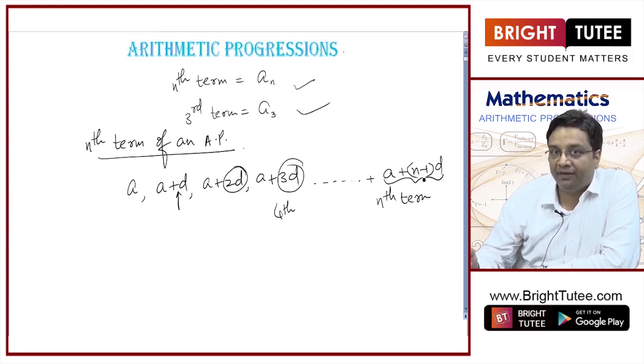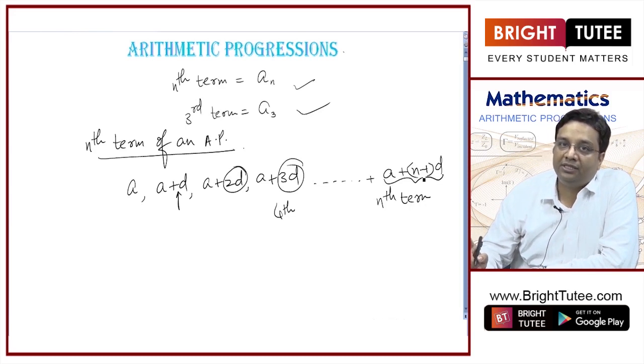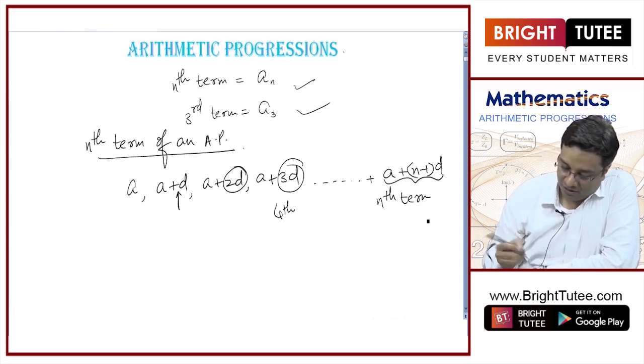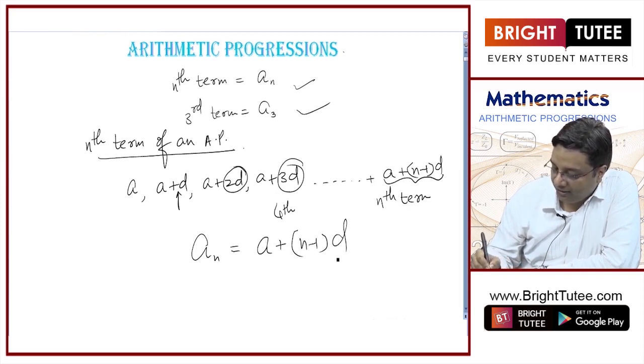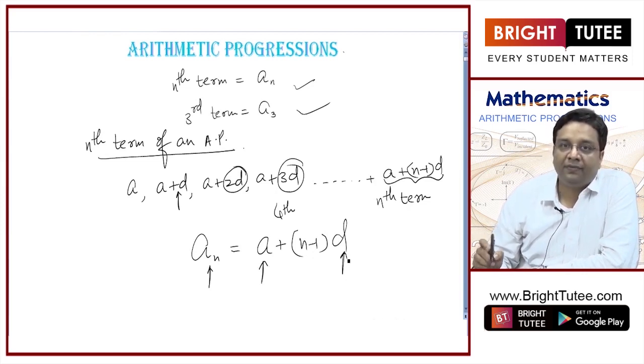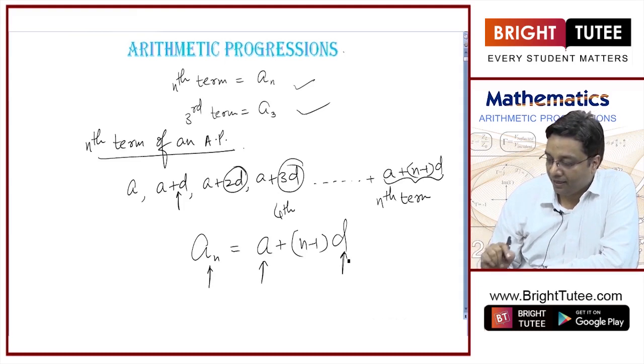This is the nth term of an AP in which the first term is A and common difference is D. So An is equal to A plus n minus 1 into D. This is the nth term, this is first term and this is the common difference of that AP.